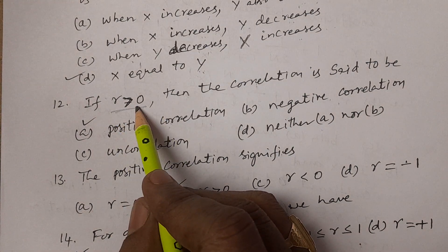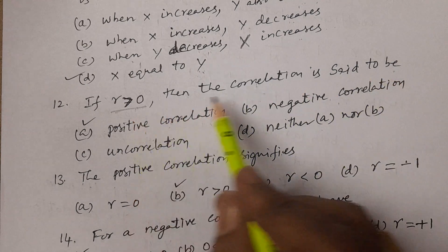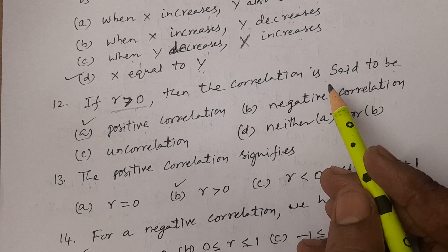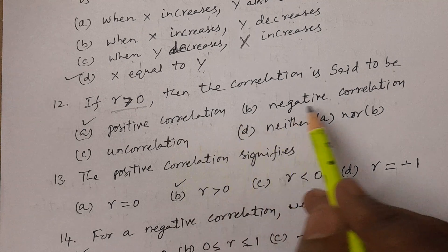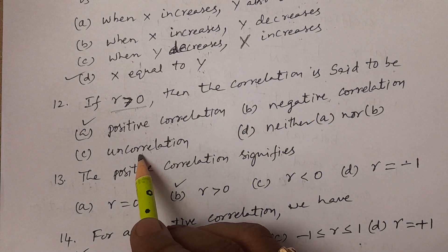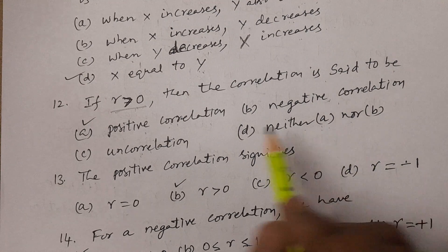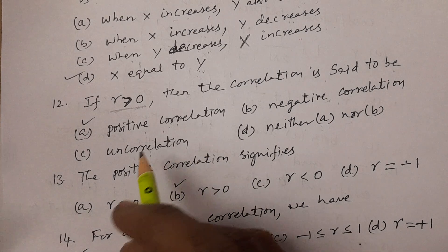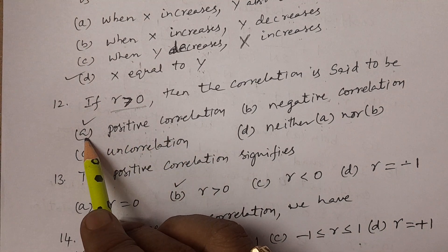To summarize: if R is greater than zero, the correlation is positive. If R is less than zero, the correlation is negative. If R equals zero, there is no correlation. This gives three key cases. The answer is option A, positive correlation.